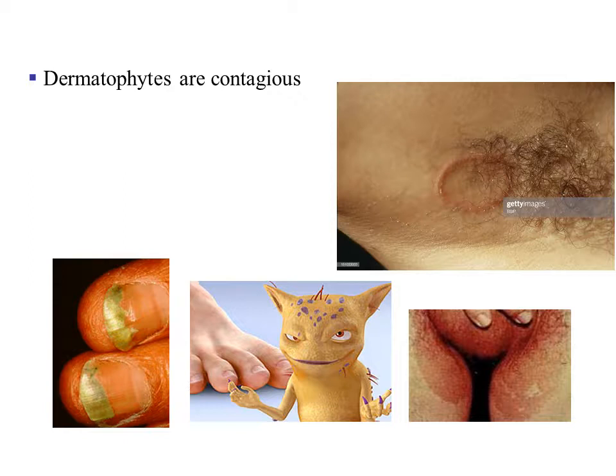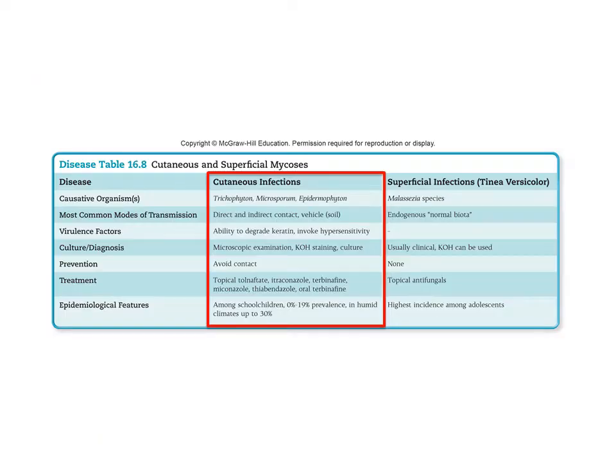Dermatophytes are contagious, meaning you can pass it from person to person. A classical example is not wearing shower shoes when you live in a dorm and have a community shower. Cutaneous infections are caused by TEM: Trichophyton, Epidermophyton, and Microsporum. Those three are going to cause skin infections.